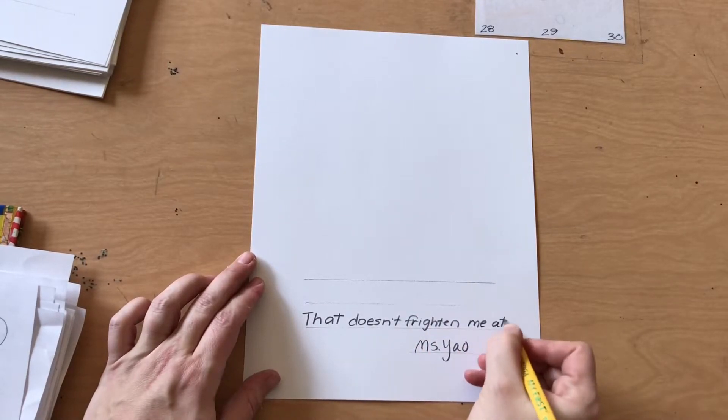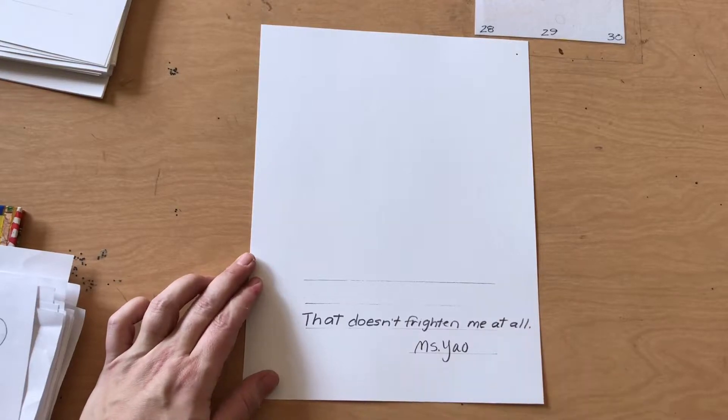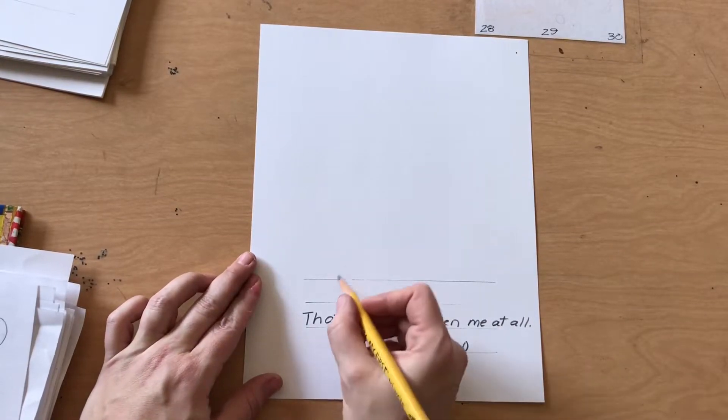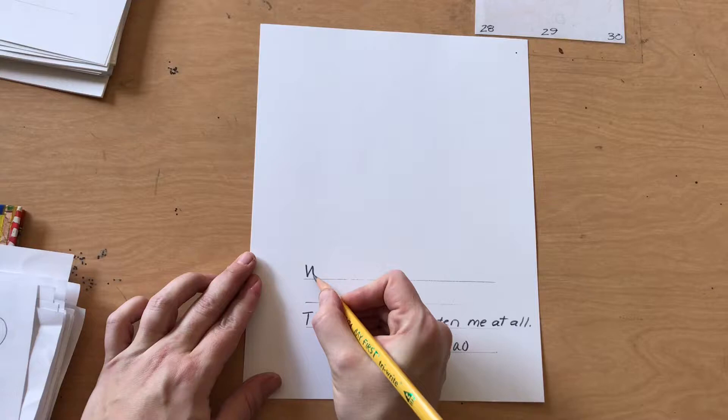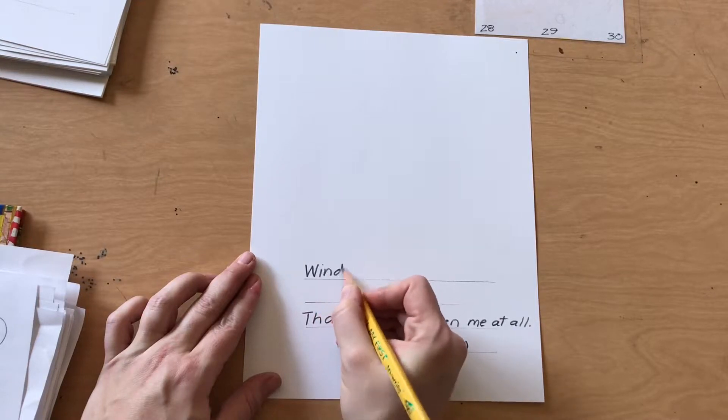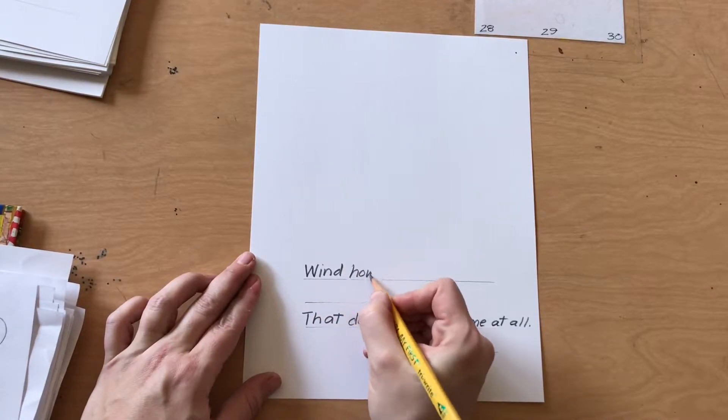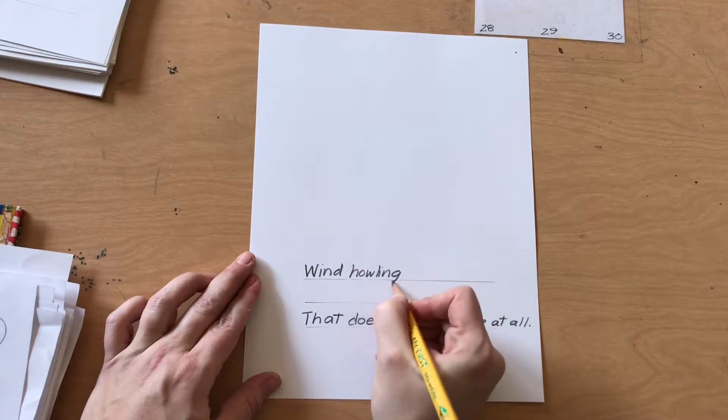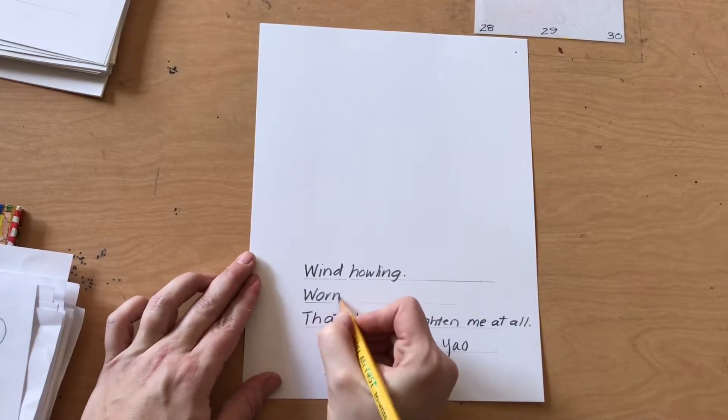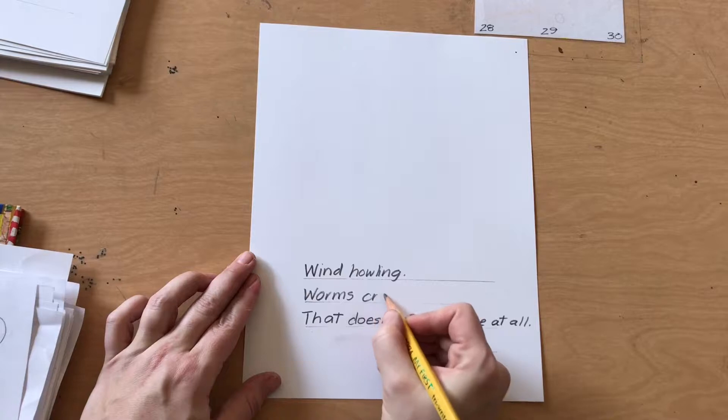That's a long sentence so you have to give yourself a lot of room to make it to the end. And then to finish your poem you're going to write two things that might frighten you or might frighten someone you know. I decided to write about wind howling and worms crawling.